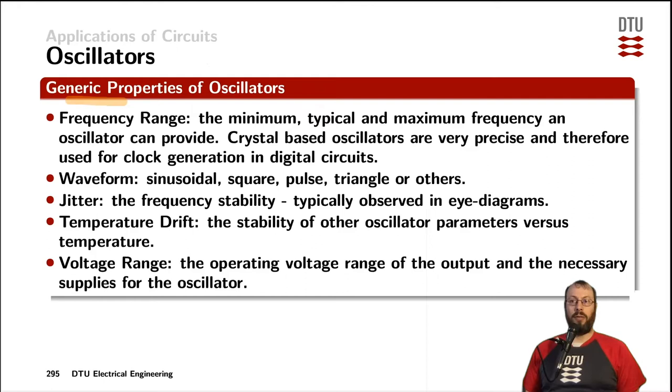Now, the generic properties of oscillators are summed up on this slide. Oscillators can be categorized by their frequency range, what's the minimum output frequency they can provide. Often you also have a typical frequency and the maximum frequency, which is telling us about the variation and the stability of the clock.